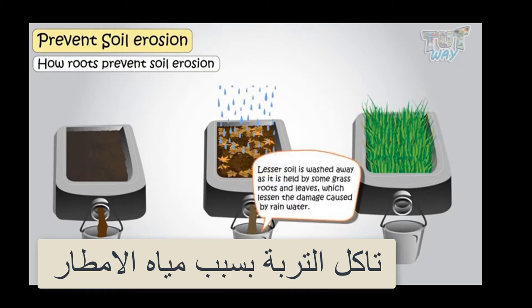Soil is held by some grass roots, and leaves lessen the damage caused by rainwater, as water does not come in direct contact with the soil.